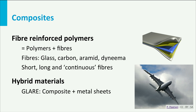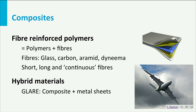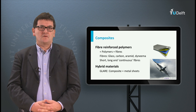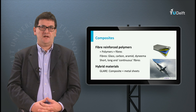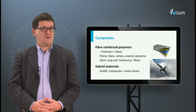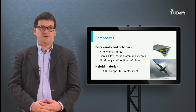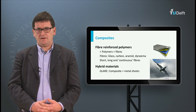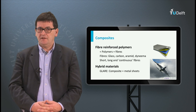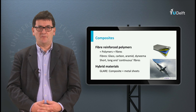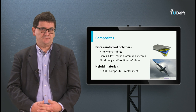For aircraft structures we usually use continuous fibers. There are also hybrid materials, made of metal layers and composite layers. The material named GLARE, which was developed at TU Delft, is a good example of a hybrid material.